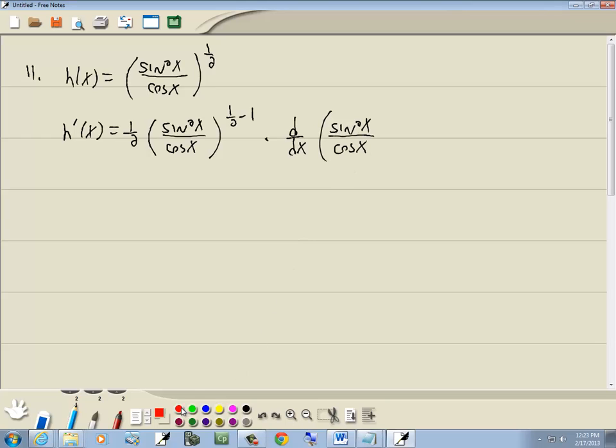Now what's inside the parentheses is a quotient. So we'll use a quotient rule. So our top part can be our p and the bottom part will be our q.